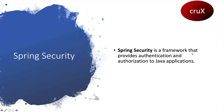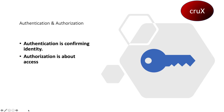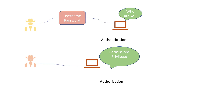Hi everyone and welcome. This chapter will guide you through a basic implementation of security in a Spring Boot application. Spring Security is a framework that provides authentication and authorization to Java applications. Authentication is used to confirm the identity of the user, and authorization is about the privileges and rights of the user and what they have access to. You can see the diagrammatic representation of this.